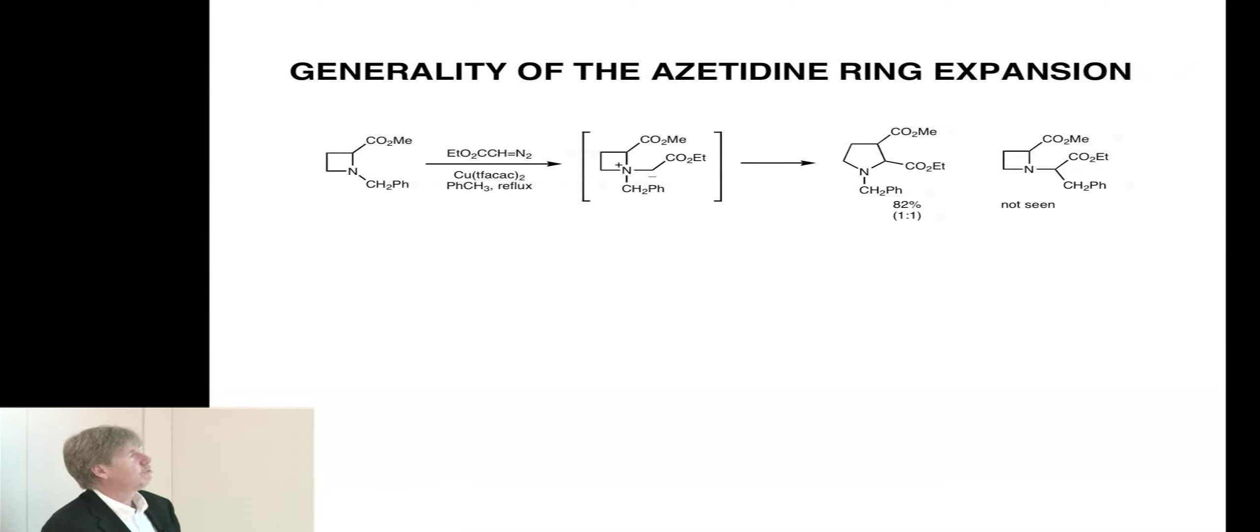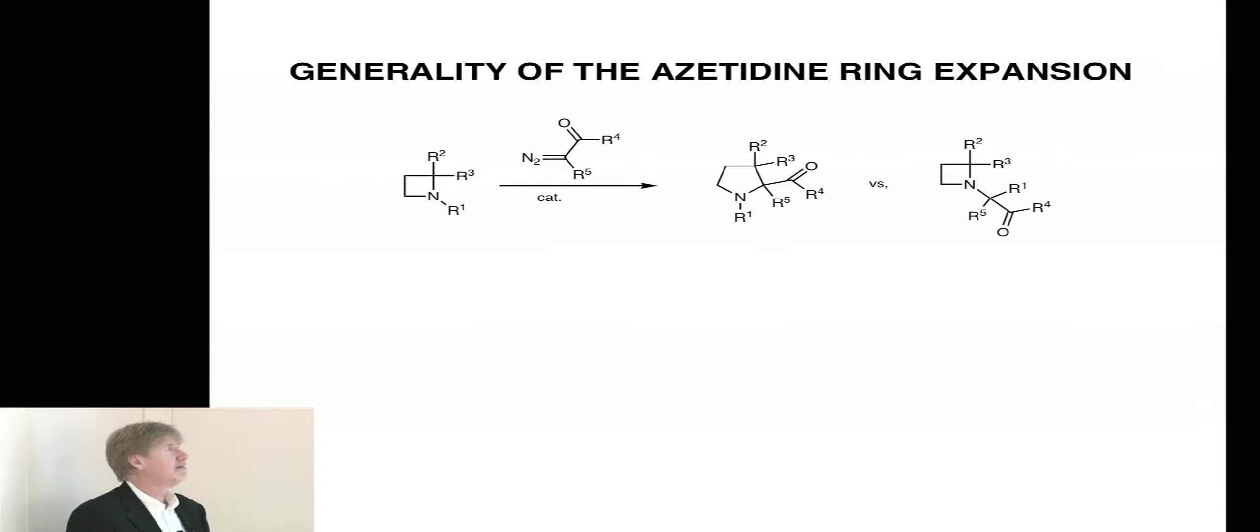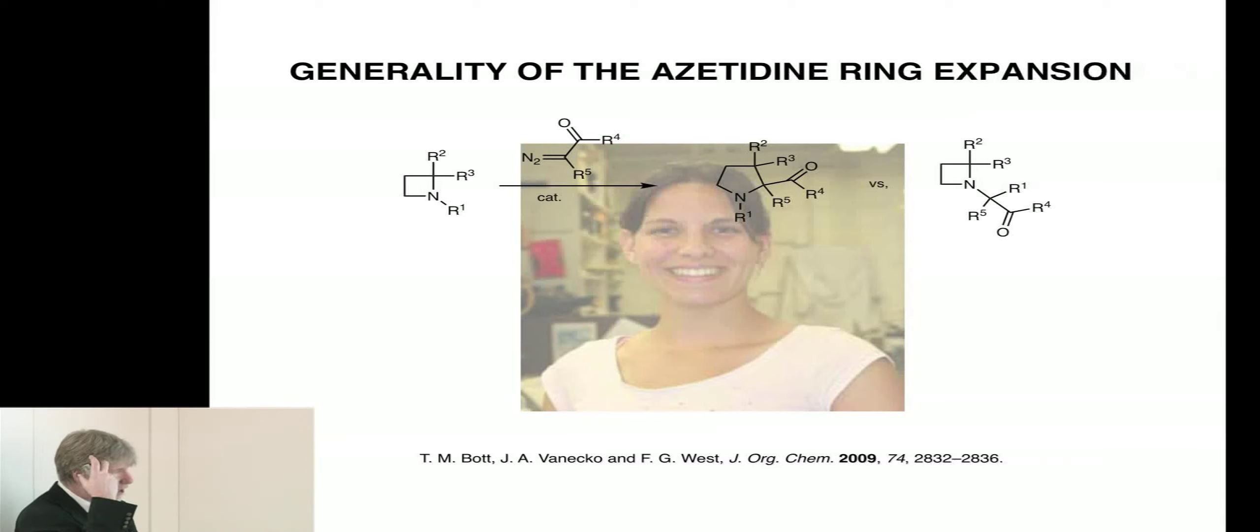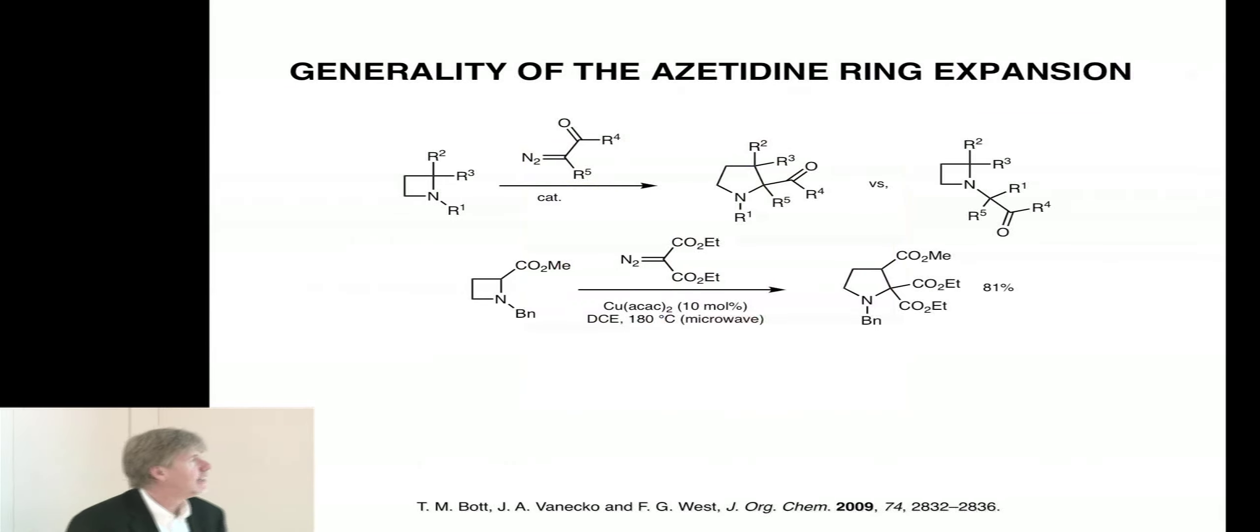But we were also interested in whether this was a general process. This is quite interesting, because the starting materials are pretty simple, just a substituted azetidine and a diazo compound. Can we use this to make a library of pyrrolidines? We decided to generalize things and look at the effect of the substituents on the ring and the substituent on the nitrogen. Could we vary these substituents and still see ring expansion, and what types of R1 were going to be so dominant that we preserve the four-membered ring and migrate the R1 group? This is the chemistry of Tina Bott, one of my current graduate students.